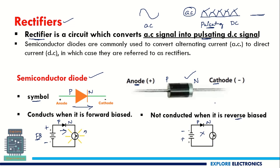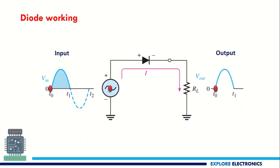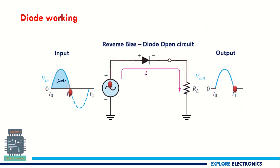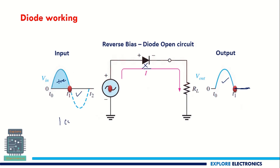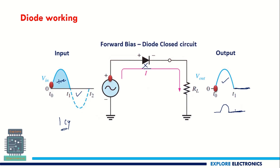Using this phenomenon, we can design rectifiers. In the first half or positive half cycle, the diode conducts and current flows, giving us an output. In the second half cycle, there is no conduction, so the output is zero. For one complete AC input cycle, we only get the first half of the signal at the output.